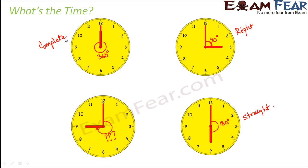Now I would like to bring to your notice a very simple thing which might create confusion. You might say that in the 3 o'clock case, the angle between the two hands was 90 degrees. But when you consider the 9 o'clock case, the angle between the two hands also appears to be 90 degrees. But why are we saying the angle is more than 180 degrees? That's because you always need to remember from where you started counting.